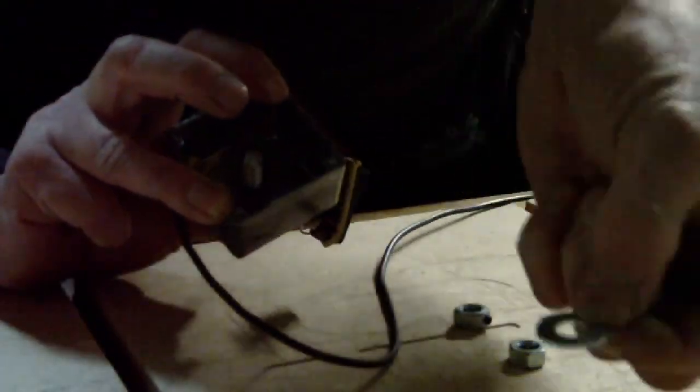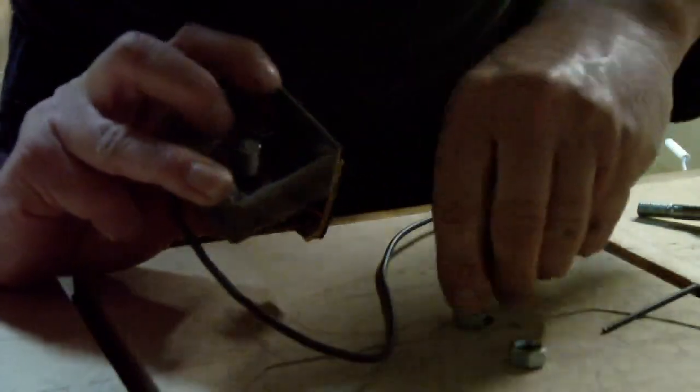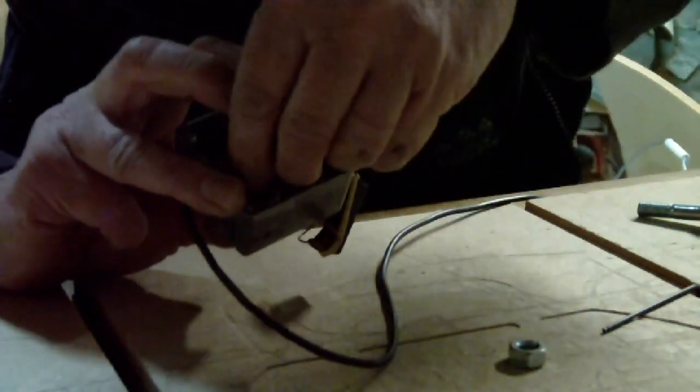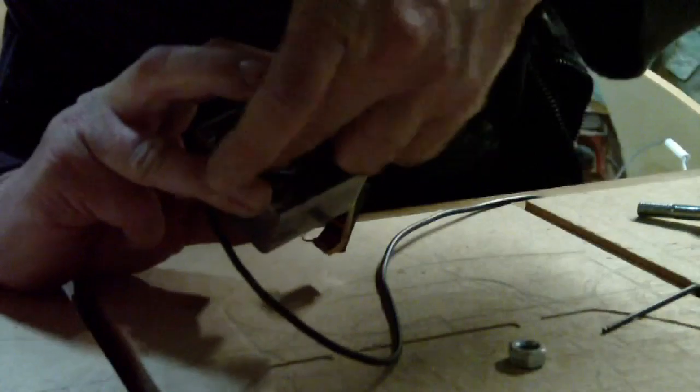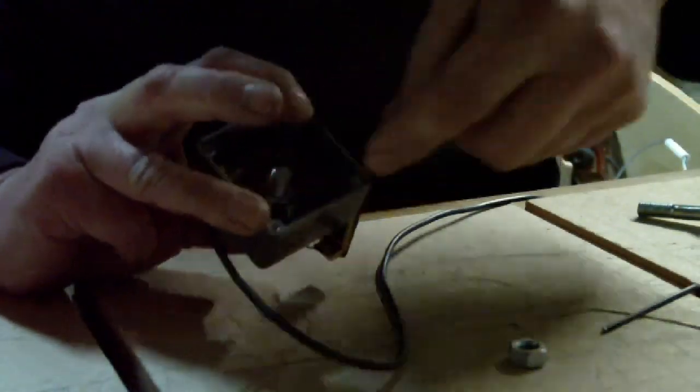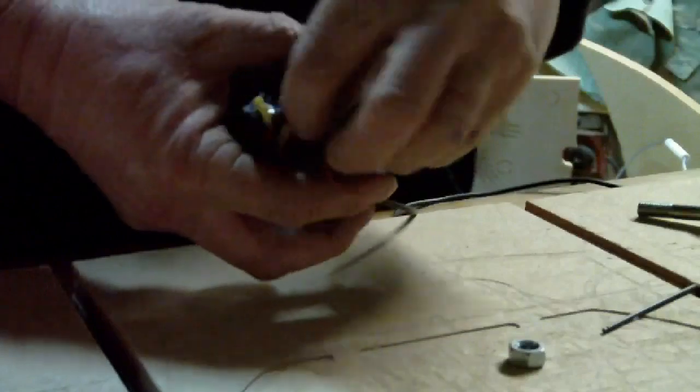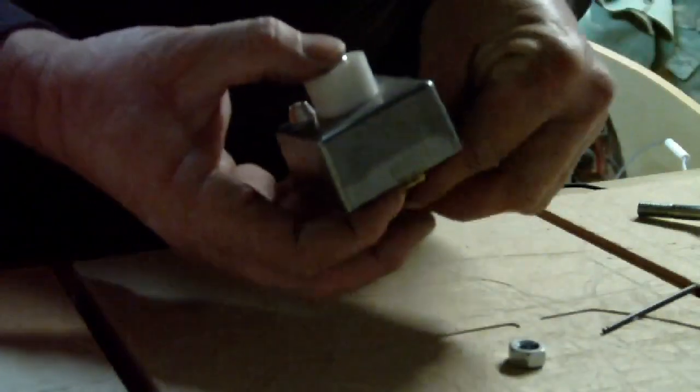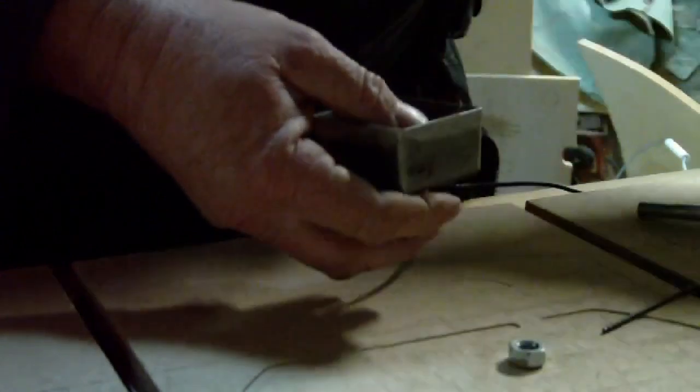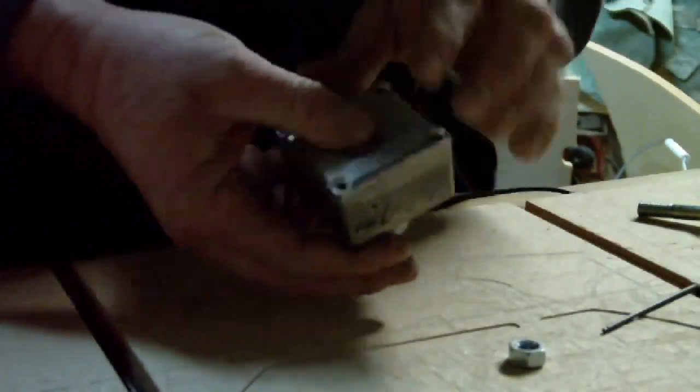Next goes on the washer and then our nut with the allen key grub screw on it, and I'm just going to wind that down. Now this nut is what we're going to use to set our height with, so I've wound it in there a little bit where I think will be correct. I'm just going to put the bottom on it like so.